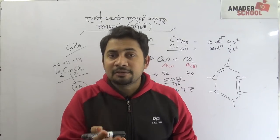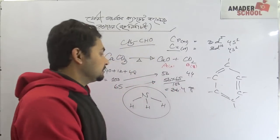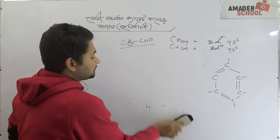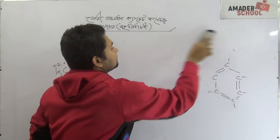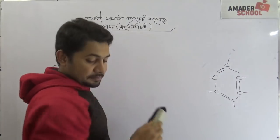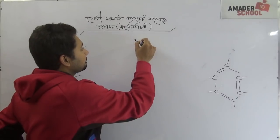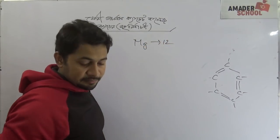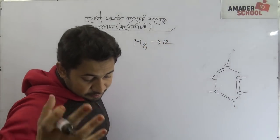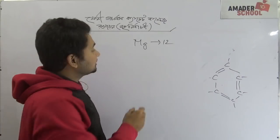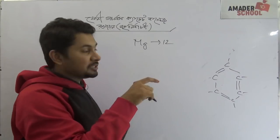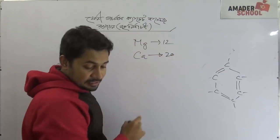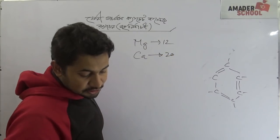I need to know magnesium's atomic number, which is 12. Magnesium is 12. And x equals 20.